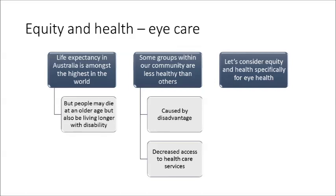In this concluding section of module three, we've now come full circle. We should understand that whilst life expectancy in Australia is among the highest in the world, people can still die at an older age but also be living longer with disability. We're also aware that there are some groups within our community that, as a result of things like disadvantage, are less healthy than others, and may not have the same access to health care services.